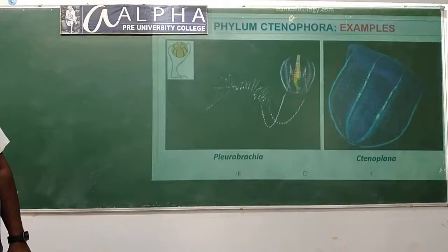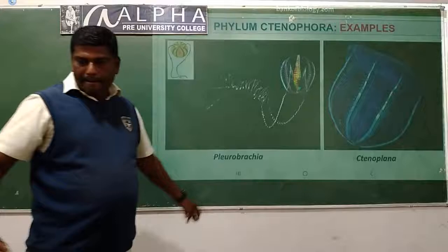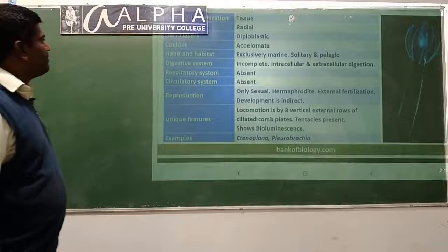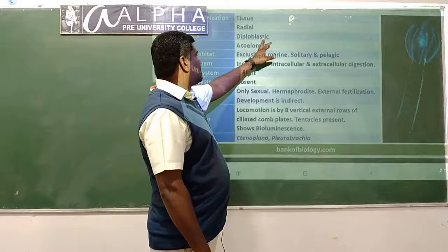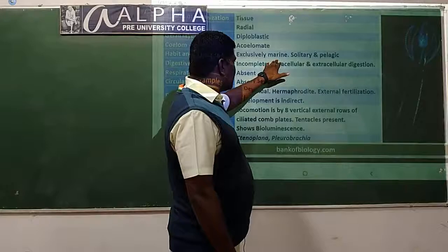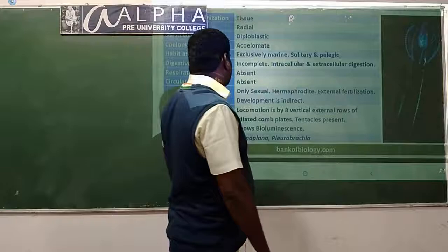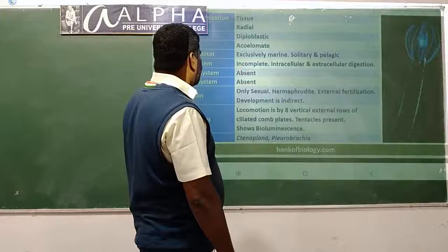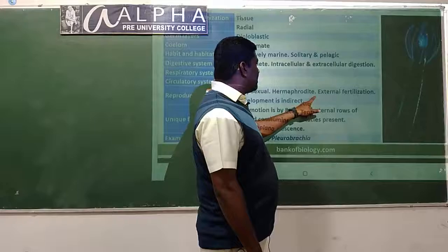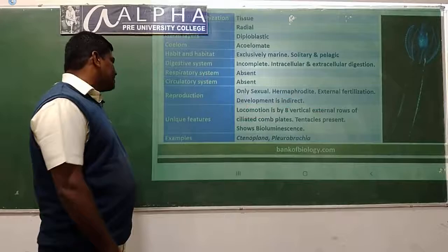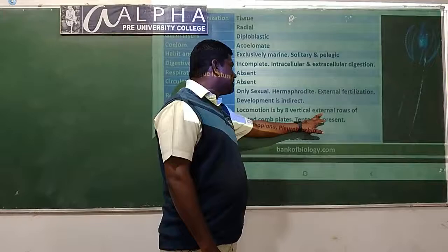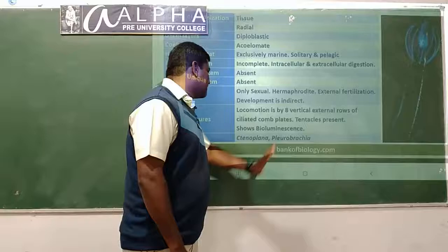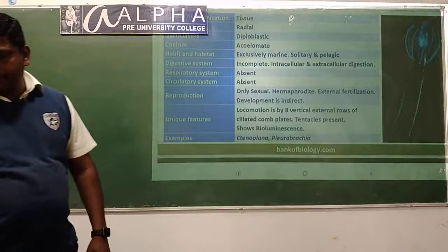They have the ability to emit light from the body - this phenomenon is called bioluminescence. Examples are Pleurobrachia and Ctenoplana. Summary at a glance: tissue level organization, radially symmetrical, diploblastic, acoelomates, exclusively marine, solitary, incomplete digestion, no respiratory or circulatory system, only sexual reproduction, hermaphroditic, external fertilization, indirect development. Unique features: locomotion by eight rows of ciliated comb plates, tentacles, bioluminescence.